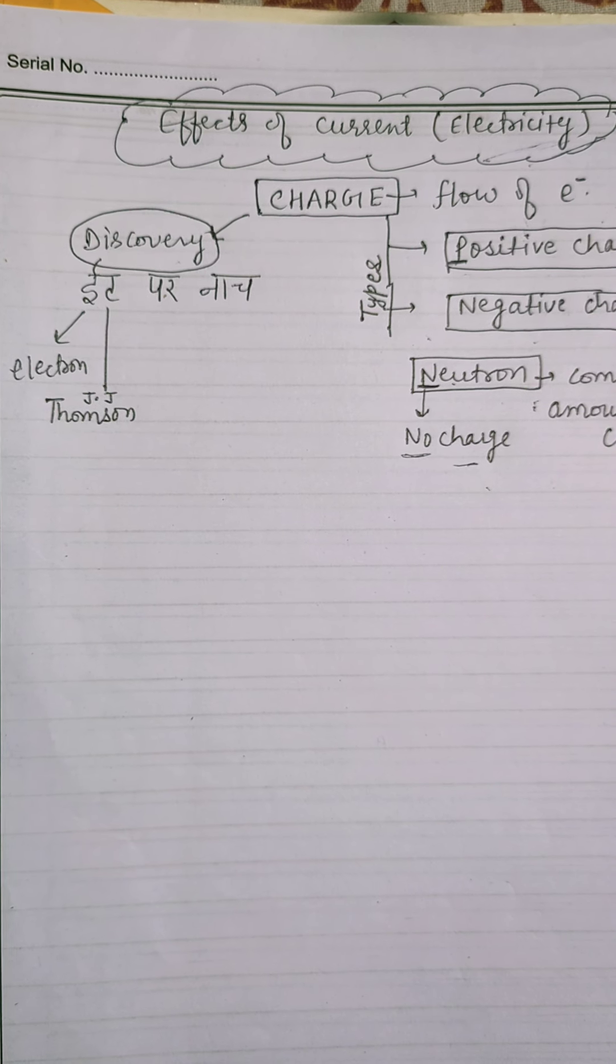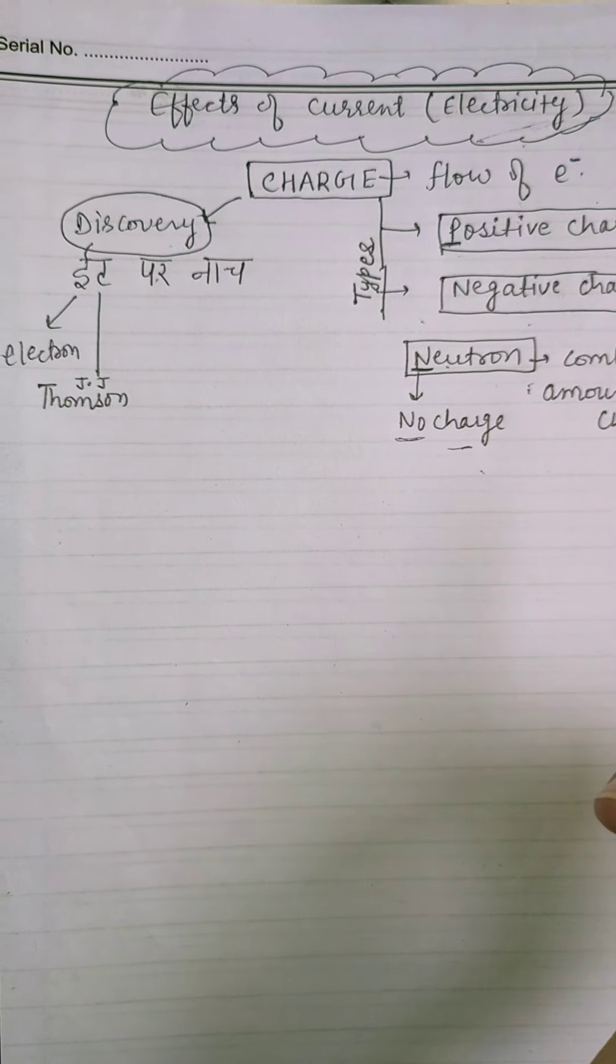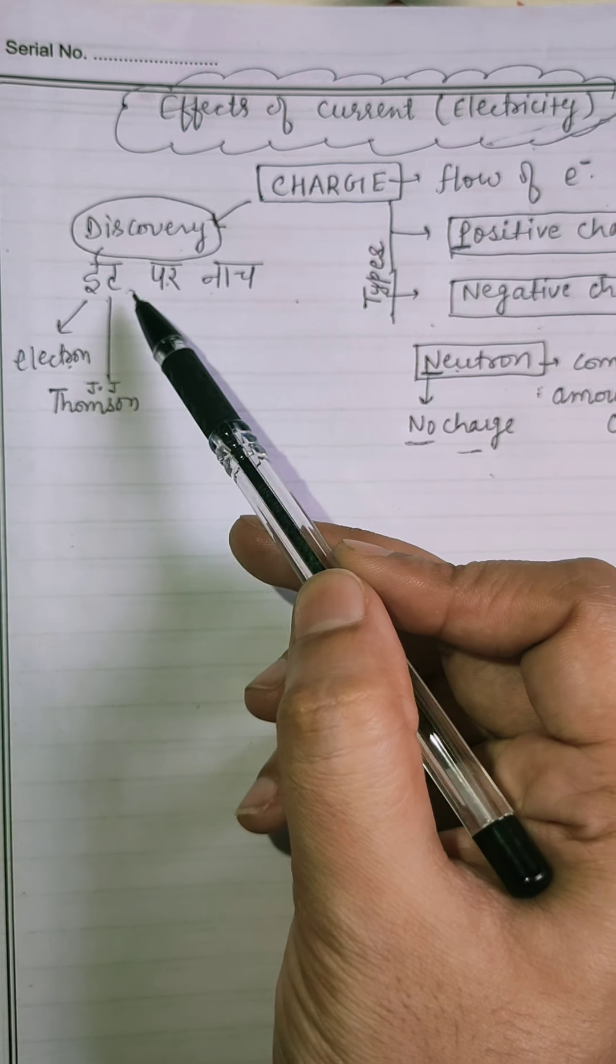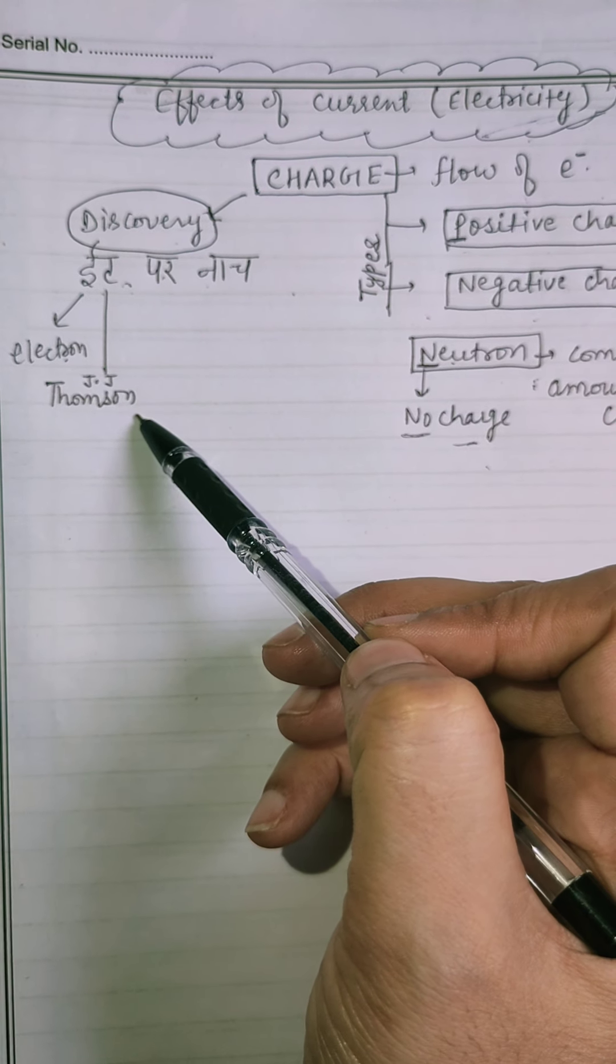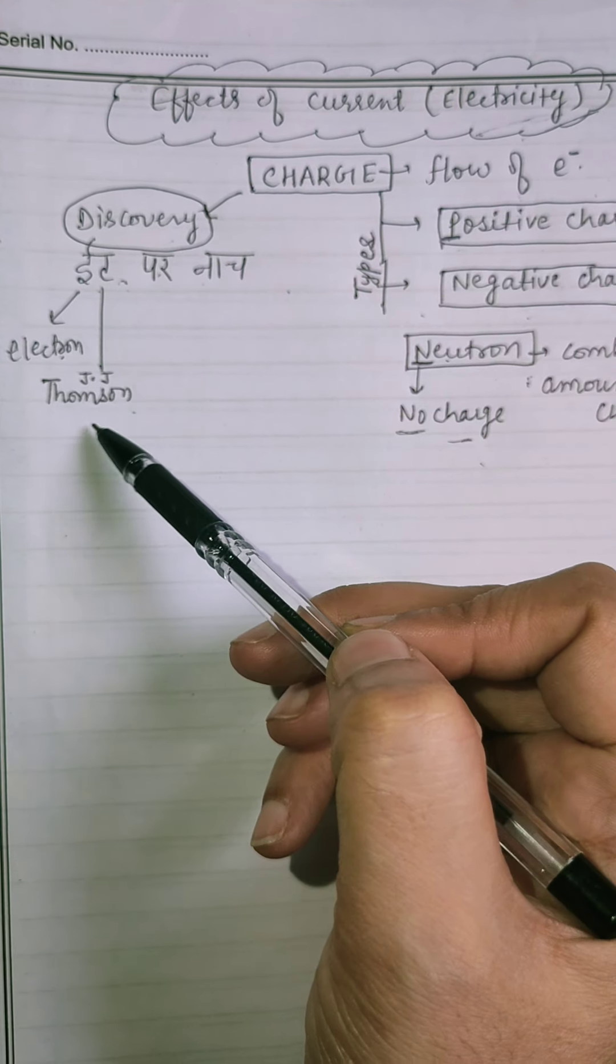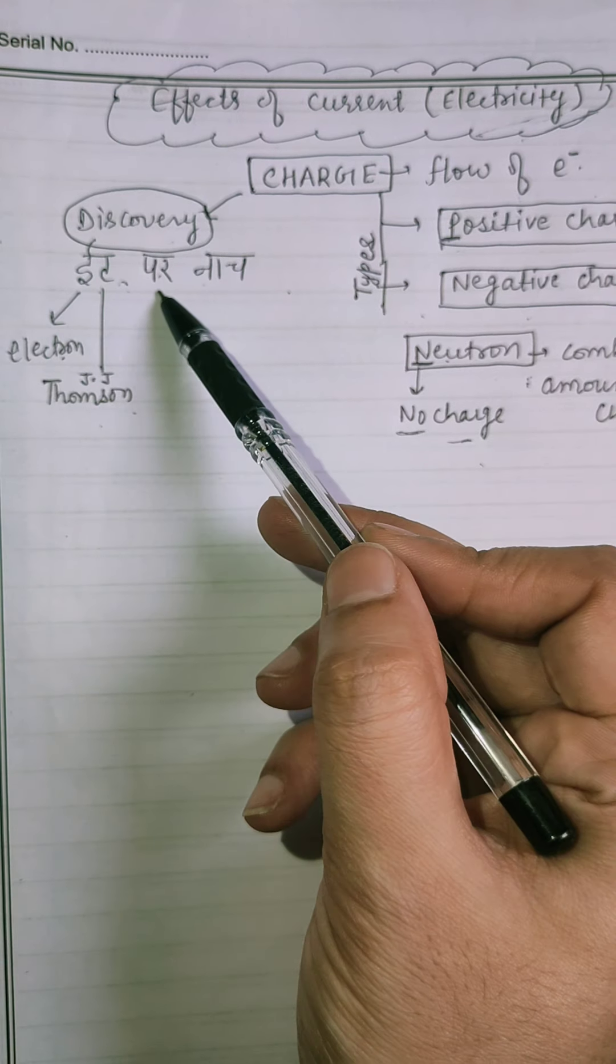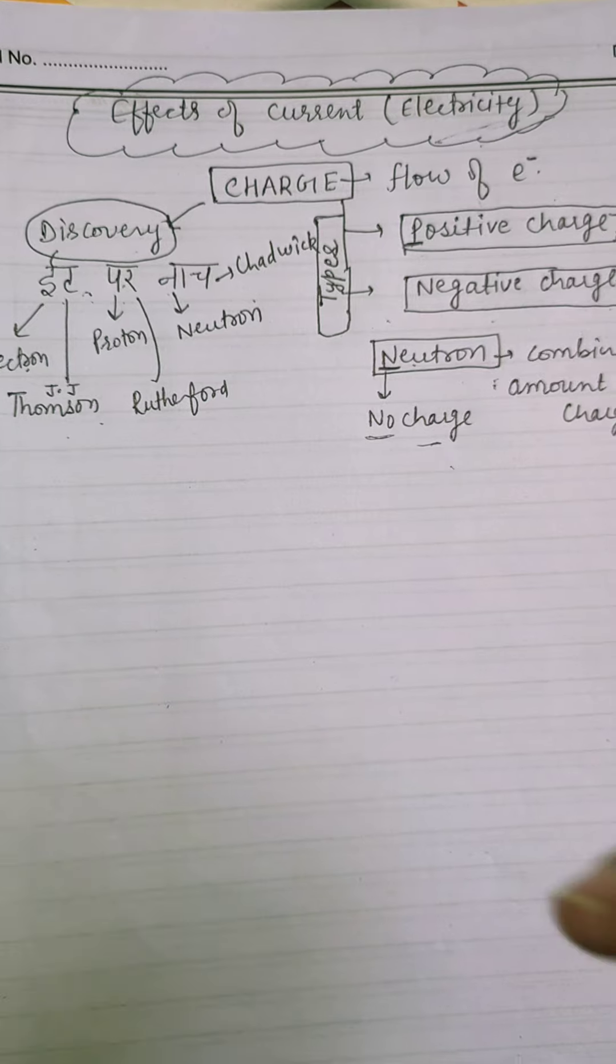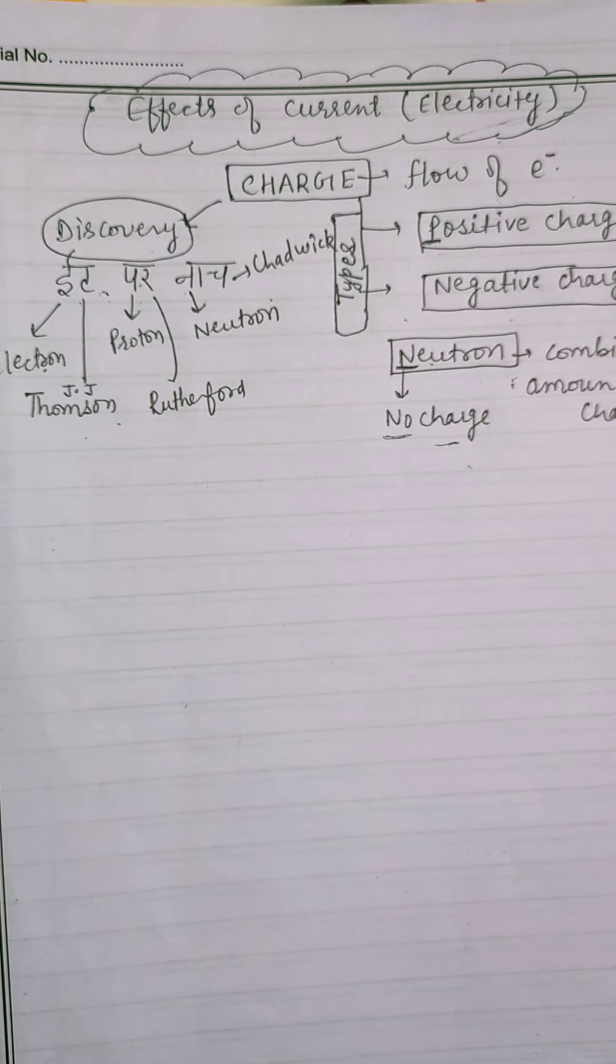Now, discovery of charges. Here, we use a short trick to learn. ETH PER NACH. E for electron. TER for Thomson. So, electron discovered by G.G. Thomson. PER C proton. R for Rutherford. N neutron. N for neutron. CH Chadwick.